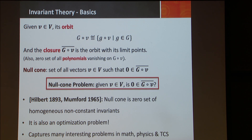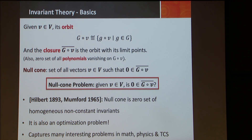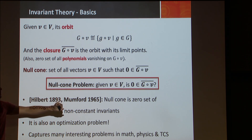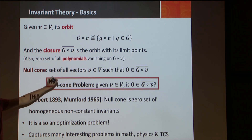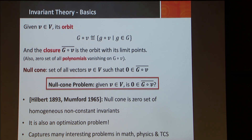Why is the null cone problem important? Hilbert in 1893 and Mumford in 1965 proved that the null cone is the zero set of all the homogeneous non-constant invariant polynomials — so this set is also an algebraic variety, with huge consequences for finiteness of invariants. Also, as we'll see later, this null cone problem is an optimization problem: zero is in the orbit closure if and only if when you minimize the norm over the orbit, you hit zero. So once you minimize the norm, you can check if zero is that element or not. This captures many interesting problems in math, physics, and computer science.